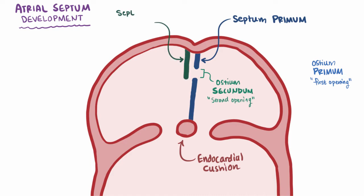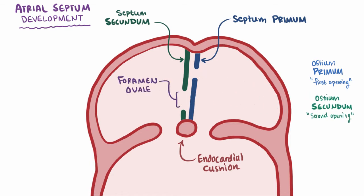We also have the septum secundum, which grows downward just to the right of the septum primum, and covers the ostium secundum like a curtain, leaving a small opening called the foramen ovale, essentially creating a makeshift valve that allows blood to go from the right atrium to the left atrium, but not the other way.